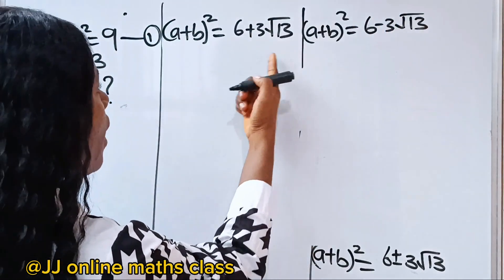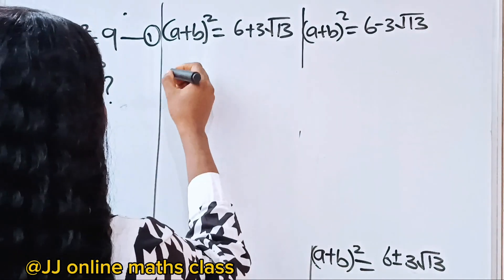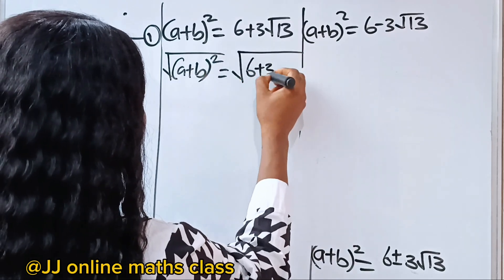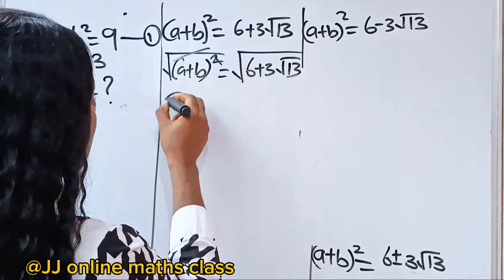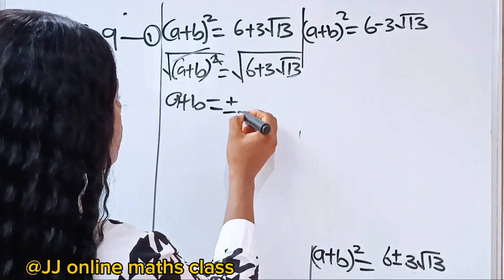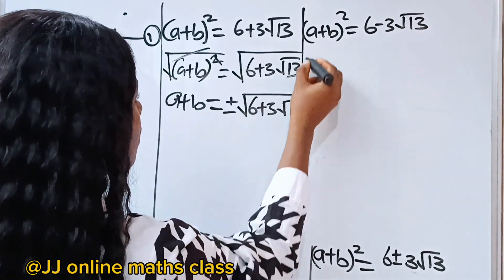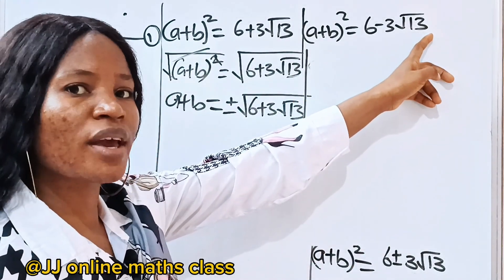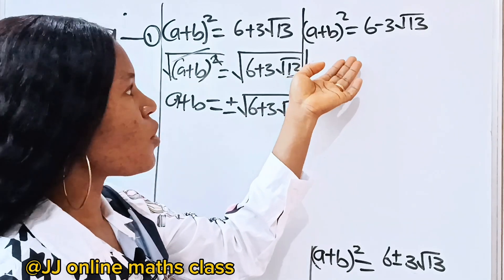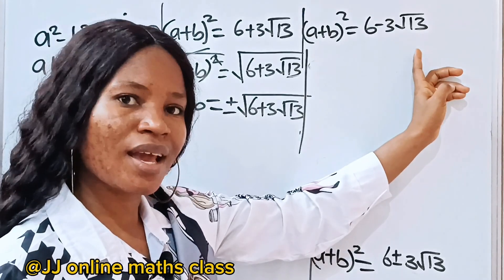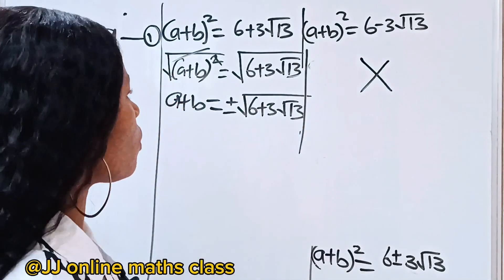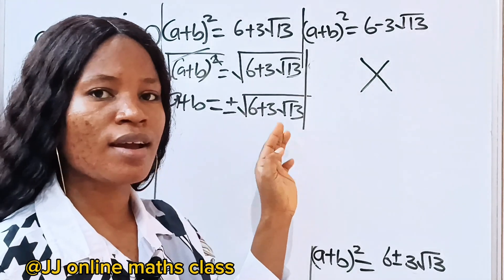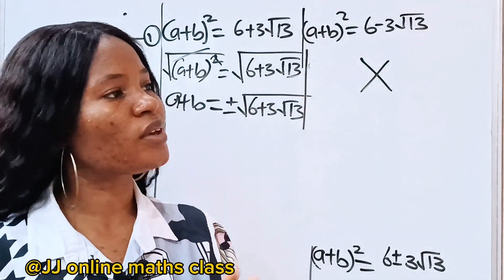So we have two values: (a plus b) squared equals 6 plus 3 root 13, or (a plus b) squared equals 6 minus 3 root 13. Now, 6 minus 3 root 13 gives us a negative number, and it's not possible for (a plus b) squared to be negative. So this one is not acceptable. The only valid answer is that a plus b is equal to plus or minus square root of (6 plus 3 root 13). Thank you for watching and have a bright, lovely day.